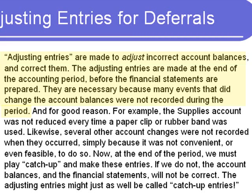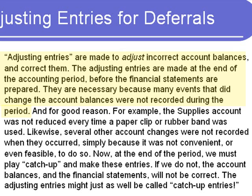Adjusting entries are made at the end of the accounting period, before the financial statements are prepared. They're necessary because many events that did change the account balances weren't recorded during the period, and for good reason. For example, the supplies account was not reduced every time a paper clip or rubber band was used. Several other account changes were not recorded when they occurred because it wasn't convenient or even feasible to do so.